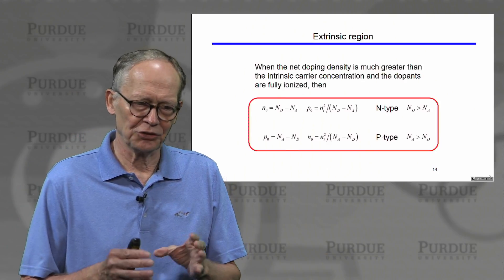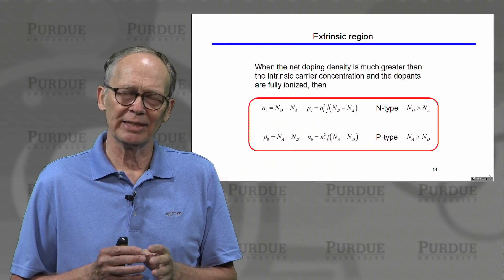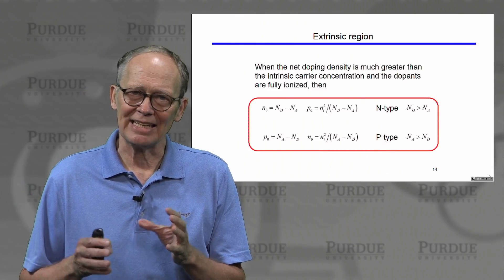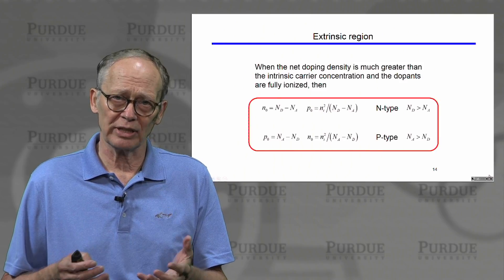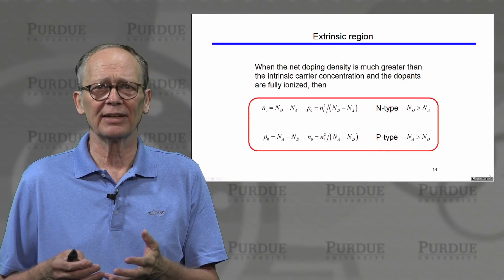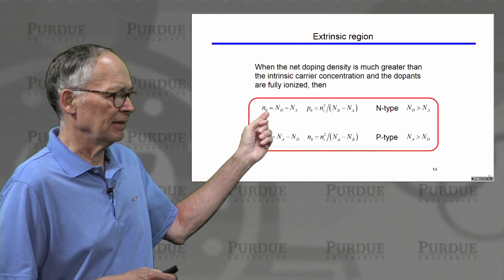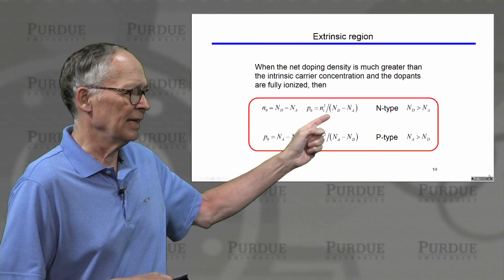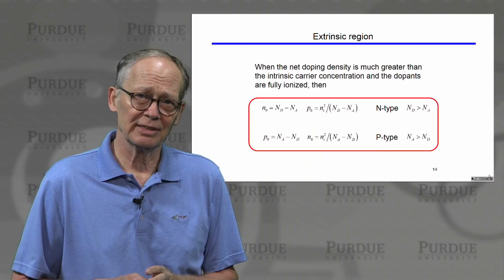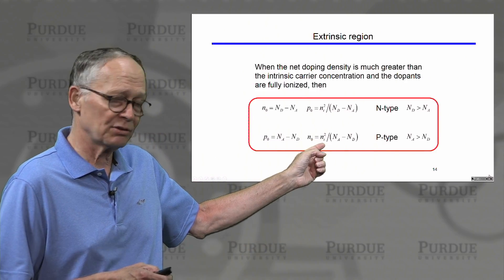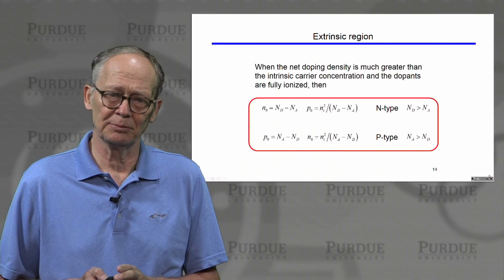We looked at different temperature regions. In the extrinsic region, carrier concentrations are dominated by the dopants we've put into the silicon lattice, not by intrinsic carriers from broken covalent bonds. In semiconductors like silicon — where all dopants are fully ionized at room temperature and the band gap is wide enough that intrinsic carrier concentration is small compared to doping densities — the answer is simple: in an n-type material, electron concentration equals the net n-type doping, and hole concentration is Ni squared divided by that electron concentration. In a p-type material, hole concentration equals the net p-type doping, and the minority electron concentration is Ni squared divided by that hole concentration.